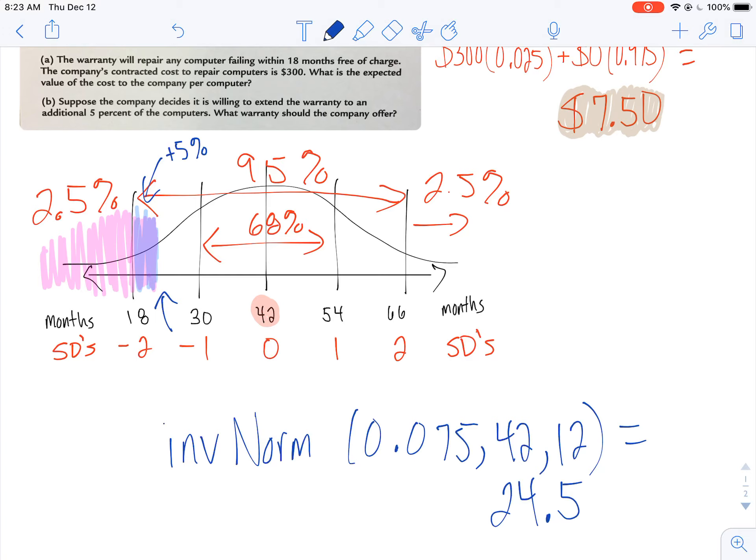But ultimately, this tells you that about 7.5% of your computers are going to fail within 24 and a half months. Or at least that's what the company expects.